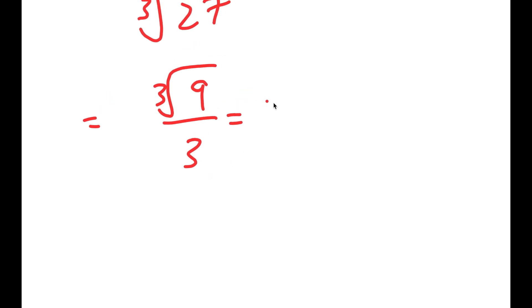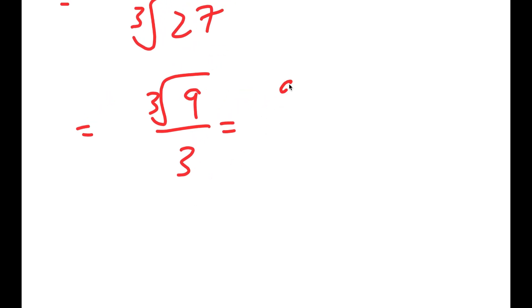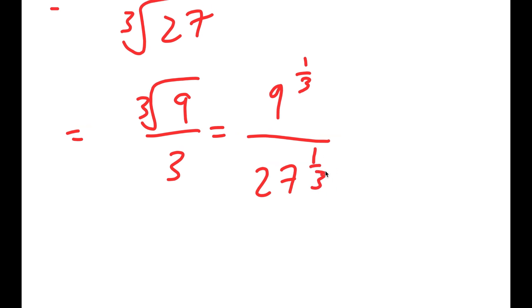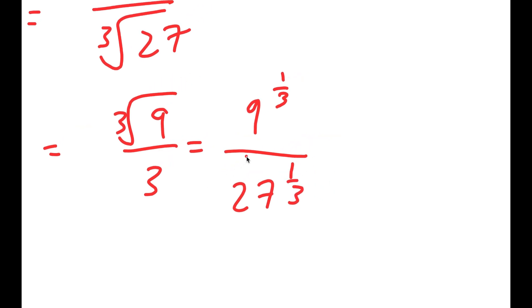Now, the cube root of 9 is the same thing as 9 to the power of 1 over 3. So I get 9 to the power of 1 over 3 over 27 to the power of 1 over 3, which we already know is 3, but I'm just writing it like this.